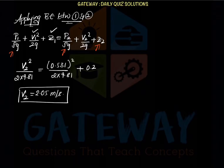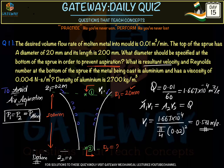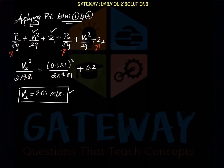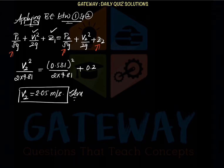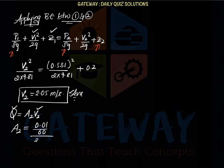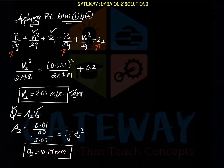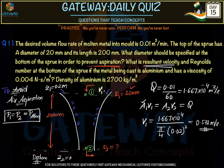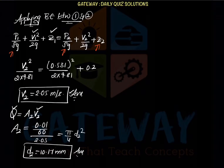V₂ = 2.05 m/s is the resultant velocity at the exit to avoid air aspiration. Using Q = A₂V₂ to find the exit diameter: A₂ = (0.01/60) / 2.05 = π/4 × D₂². Solving gives D₂ = 10.17 mm. This is the diameter that should be specified at the bottom of the sprue to prevent aspiration.